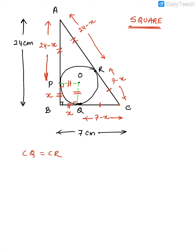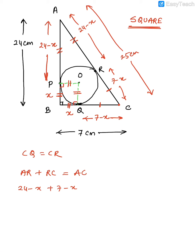By Pythagoras theorem, AC = 25 cm. Now AR + RC = AC, so (24 − x) + (7 − x) = 25, giving 31 − 2x = 25, so 2x = 6, and x = 3 cm. Therefore, the radius of the inscribed circle is 3 cm.